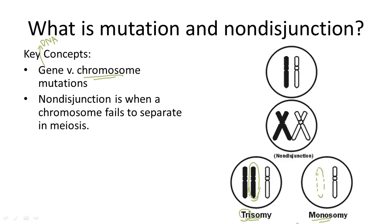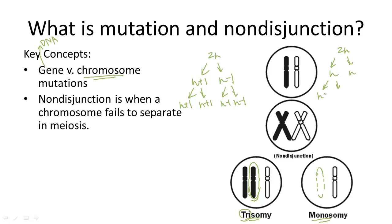There are two different ways you can end up with non-disjunction. Either the homologous chromosomes fail to separate during meiosis one — and then the mutation passes on to the sister chromatids because they're exactly identical — or the homologous chromosomes separate correctly but the sister chromatids do not separate correctly.